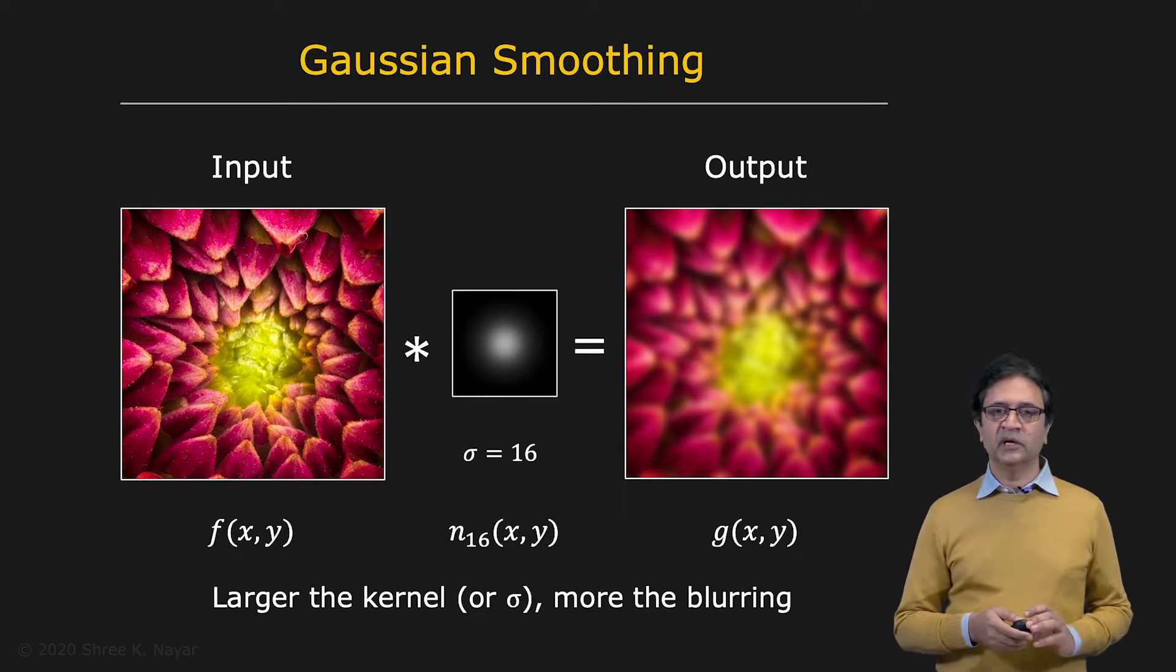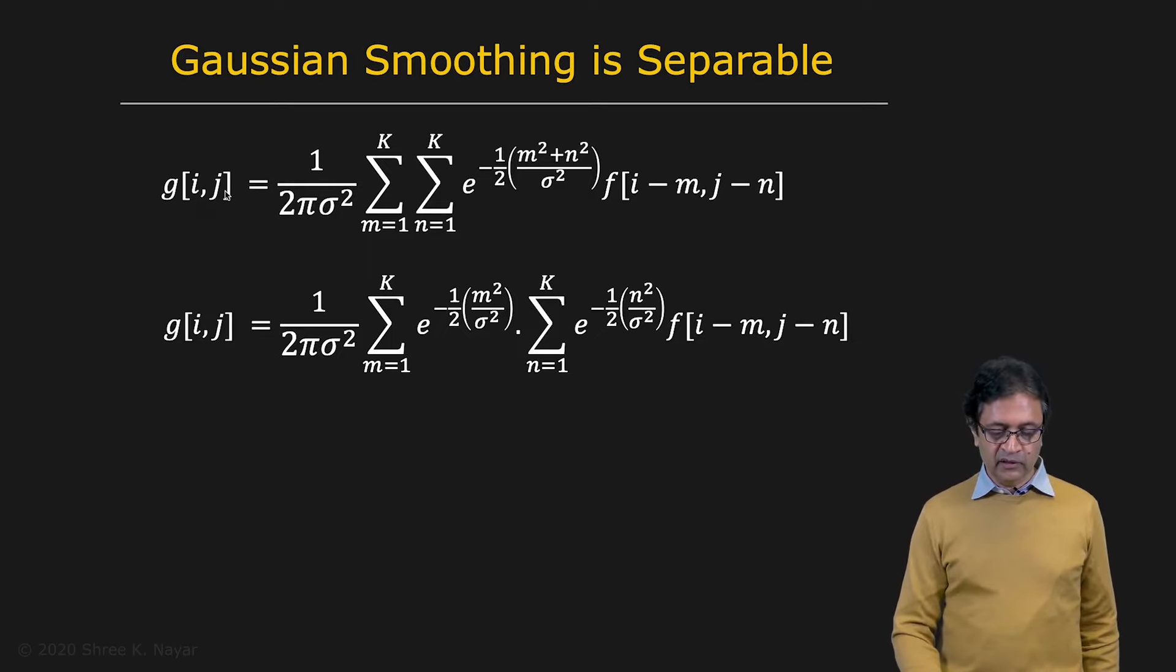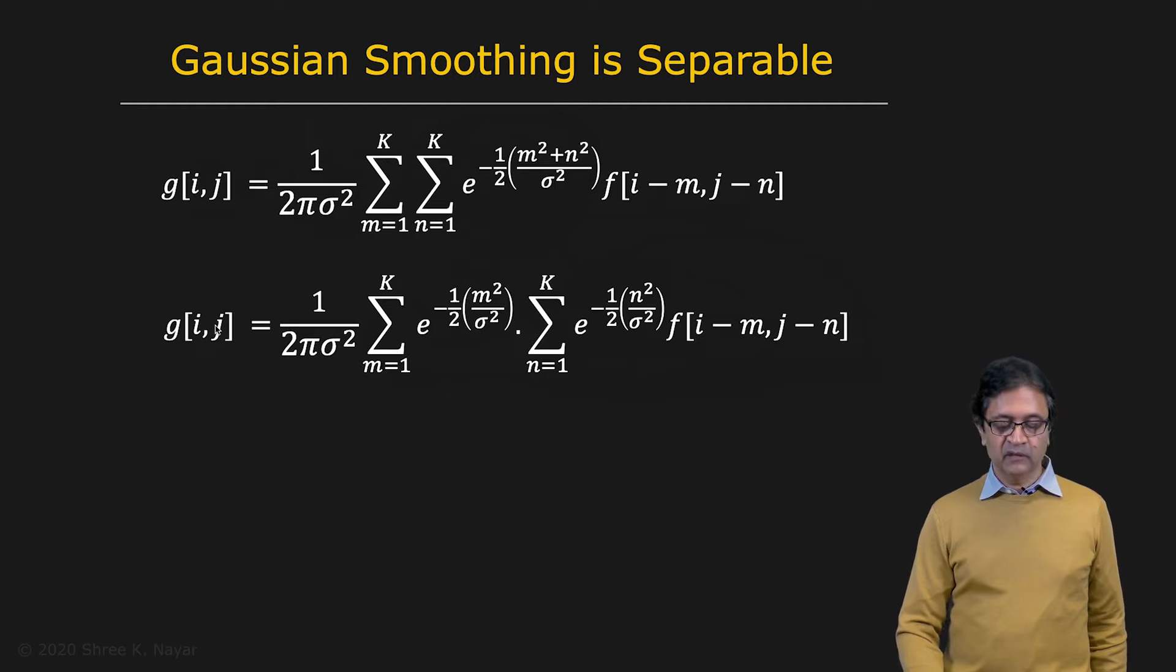Now, one of the things that makes the Gaussian mask or filter really attractive is the fact that it is separable. So what does this mean? So here you have the output g_ij, which is the input f convolved with the Gaussian kernel right here. This is the Gaussian kernel in discrete domain. And this is a normalization factor out here. Well, this exponent that you're looking at, e to the power of minus half (m squared plus n squared) divided by sigma squared, this can be split into two exponents, one in m only and the other in n only. As a result of which, you can move the summation forward. And you can have this term which is summing over m. And then you have a second one which sums over n. So what this implies is that there is a convolution happening here, but with a one dimensional mask. It's a Gaussian, indeed a Gaussian, but it's a 1D Gaussian, not a 2D Gaussian. And whatever that result is, then you're going to convolve it with another 1D Gaussian to get your final output.